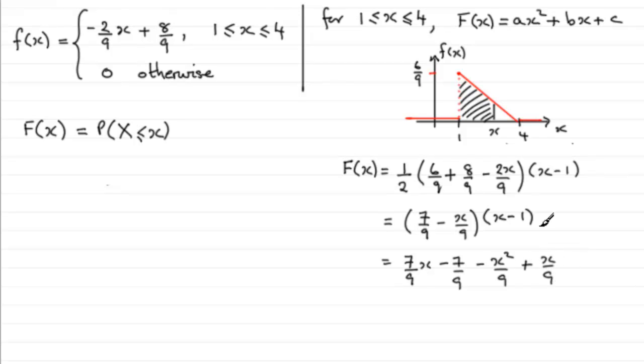So if we do it in descending powers now, so we have this format, we're going to have minus x squared over 9 or minus 1 ninth x squared. So you can see the a value would be minus 1 ninth. And then for the x terms, we've just got 7 ninths x plus another 9th x, so it's going to be plus 8 ninths x. And then finally, minus 7 ninths. So F(x) is in this format.